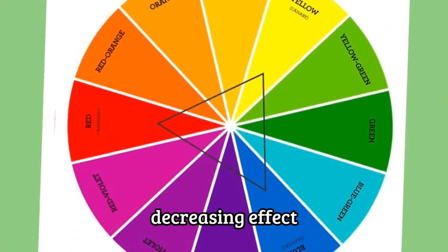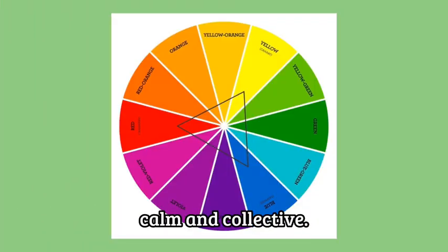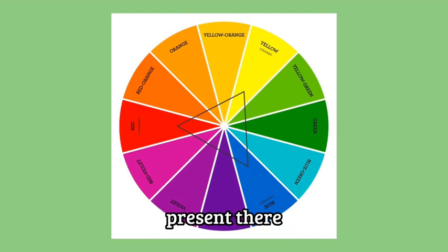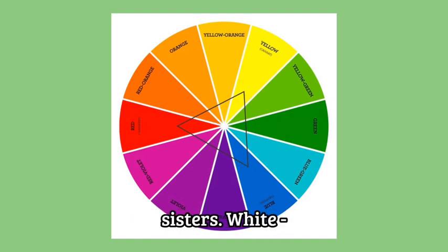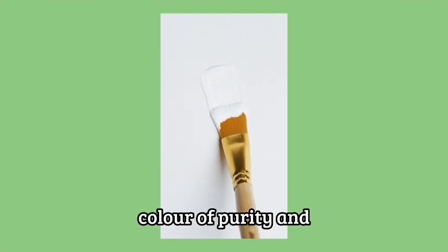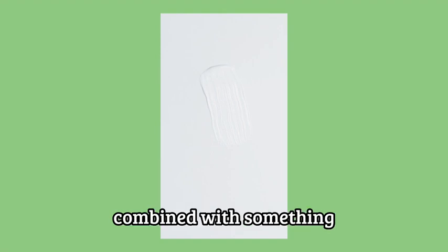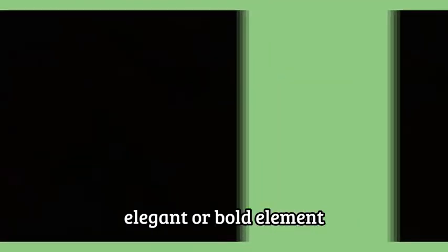Green is the color of nature, creating a friendly and comforting atmosphere where it is used. Blue is another calming color, with a decreasing effect on appetite, appealing to those that are cool, calm and collective. In nature we think of the blue sky and sea and the calmness and tranquility present there. Violet is a royal color that also has a calming effect, along with its purple and lavender counterparts. White has been the color of purity and cleanliness — lean toward the thousands of variations of white available, perhaps combined with something a bit more daring for your accents. Black can create a sophisticated, elegant or bold element when used correctly in your color palette, but never use too much black or it will lose its effect and overpower everything.